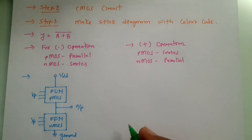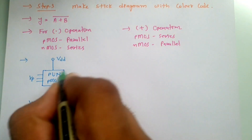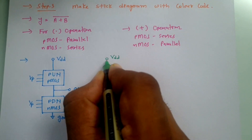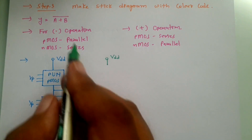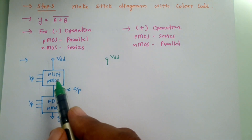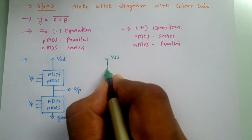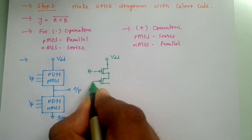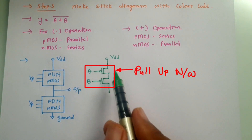Now let us form the connection for A plus B whole bar as per the CMOS circuit. First we need to form the pull-up network made up of PMOS, with VDD supply at the top. The function is A plus B whole bar, and for a plus operation PMOS should be in series. So I connect PMOS with input A and PMOS with input B in series — that is the A plus B operation. This is my pull-up network.